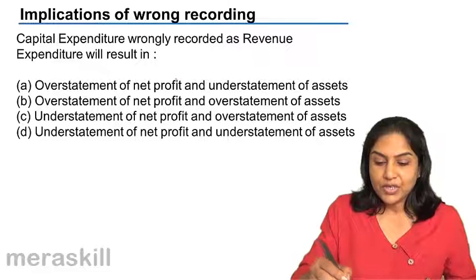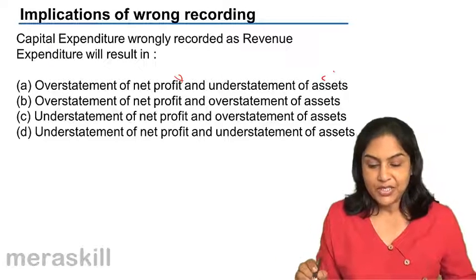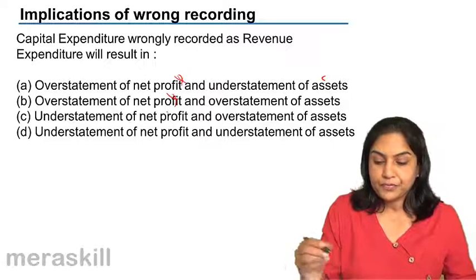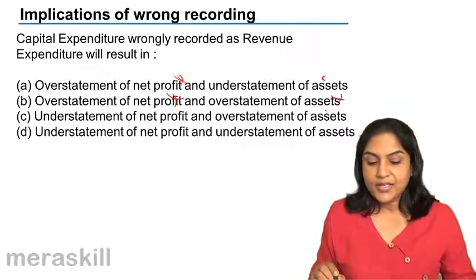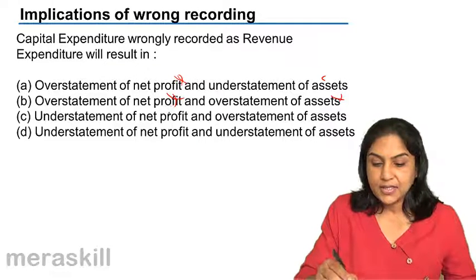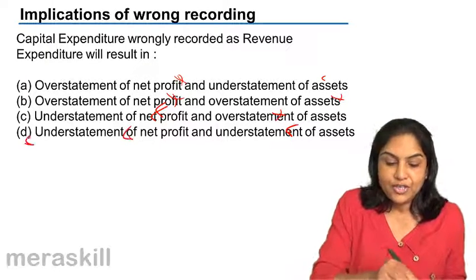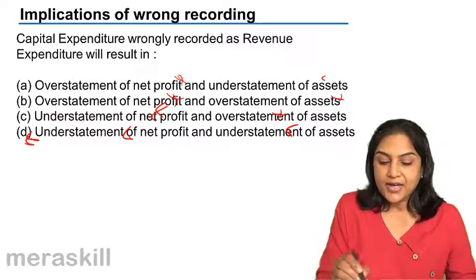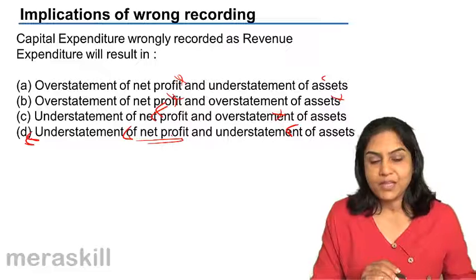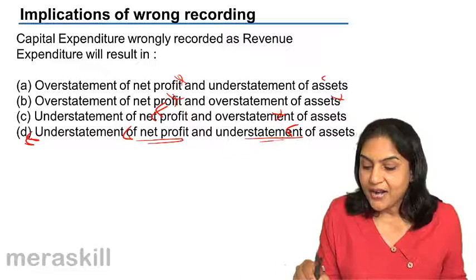Let us verify: there will not be an overstatement of profit — that would be wrong. Is there an understatement of assets? Yes. Overstatement of net profit? No. Overstatement of assets? No. Understatement of net profit? Yes, because capital expenditure has gone as revenue expenditure, so there is an understatement of profits and an understatement of assets. Therefore, D is our correct answer. Capital expenditure wrongly recorded as revenue expenditure results in understatement of net profit — because it was not an expense but we took it as one, so profit came down — and understatement of assets, because we had an asset but did not record it.